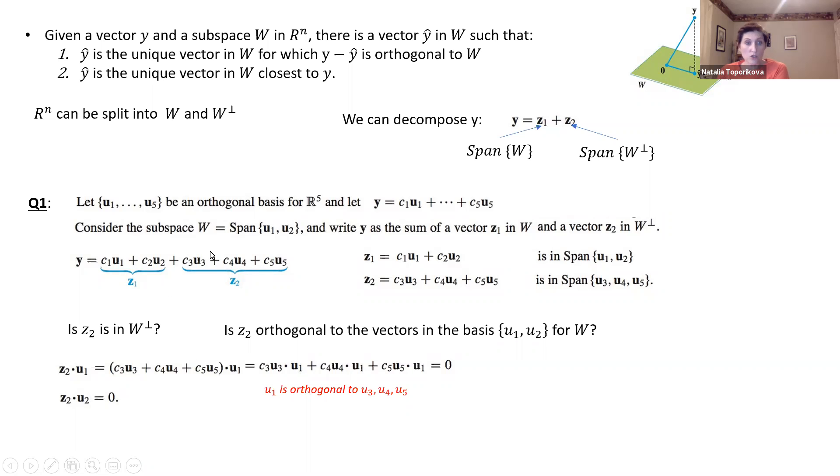And we can do the same type of calculation to confirm that z2 is also orthogonal to vector u2. So indeed, we show that our second component is complementary to our subspace W formed by u1 and u2. And this is how we can apply and expand any vector into the combination of its projection and an orthogonal subspace.